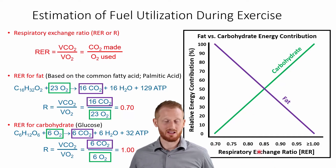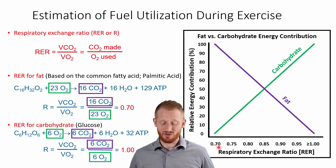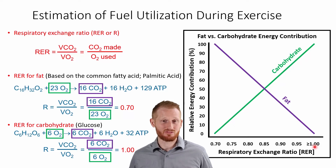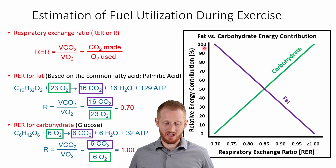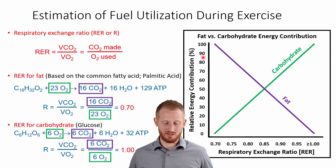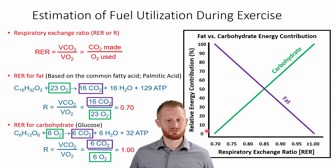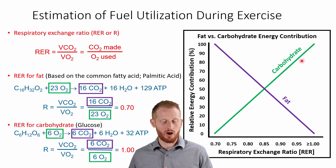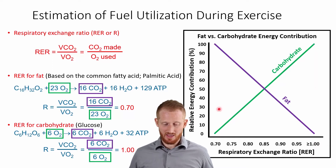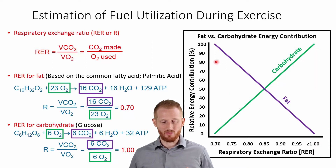Looking at this graph, the x-axis has the respiratory exchange ratio starting at 0.7 — which is typically about the lowest you're going to see at rest — going up to equal to or greater than 1.0, which is what we see at peak or maximal exercise. On the y-axis, we have the percentage of total energy used aerobically contributed from either fats (the purple line) or carbohydrates (the green line). The two lines cross over time: as exercise intensity increases, we use less and less fat and more and more carbohydrates. At an RER of about 1, we're using almost completely carbohydrates, whereas at an RER of 0.7, we're using almost entirely fats.